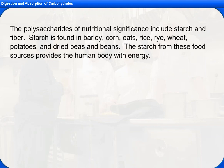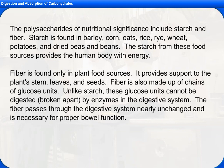The starch from these food sources provides the human body with energy. Fiber is found only in plant food sources and provides support to the plant's stem, leaves, and seeds. Fiber is also made up of chains of glucose units, but unlike starch, these glucose units cannot be digested or broken apart by enzymes in the digestive system. The fiber passes through the digestive system nearly unchanged and is necessary for proper bowel function.